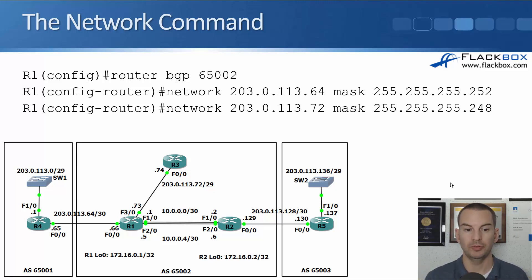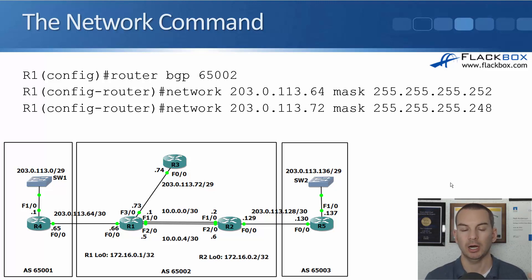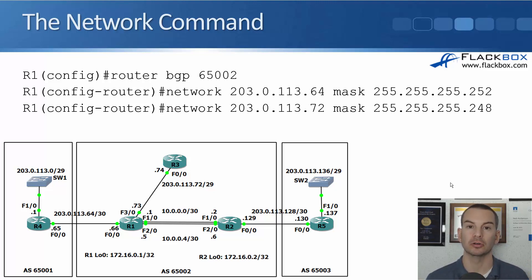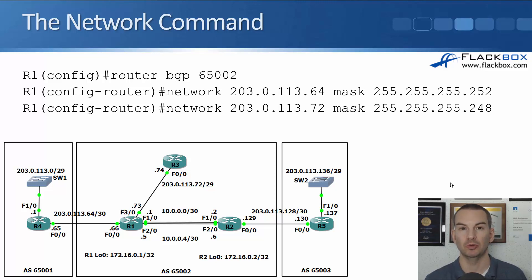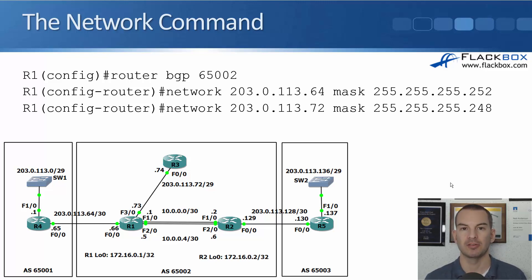On R1 we want to advertise the 203.0.113.64 network going over to R4, and also the 203.0.113.72 network going up towards R3. R1 is connected to both of those, and we want everywhere in our internet to know about those networks. It's configured under global BGP: router BGP 65002, then network 203.0.113.64 mask 255.255.255.252 for the slash 30 to R4, and network 203.0.113.72 mask 255.255.255.248 towards R3.